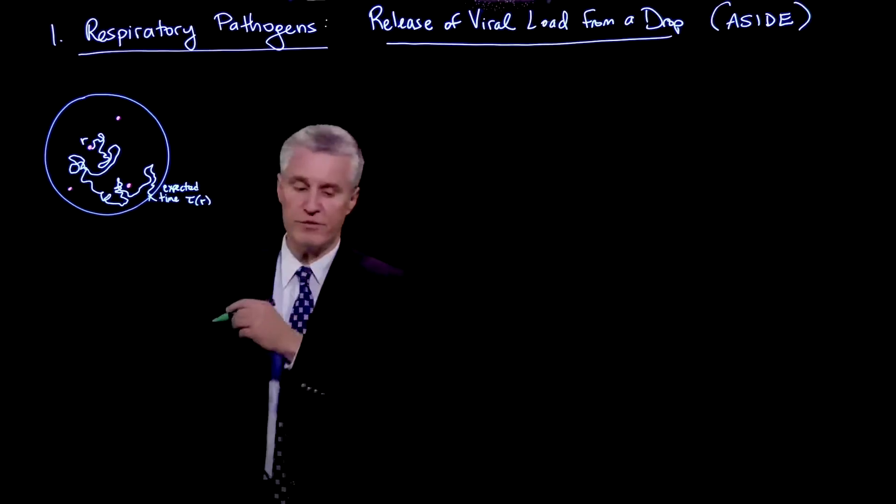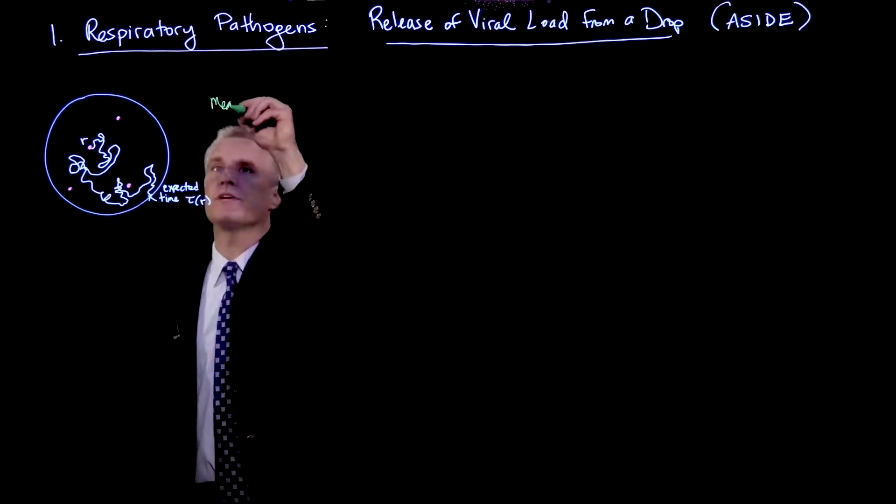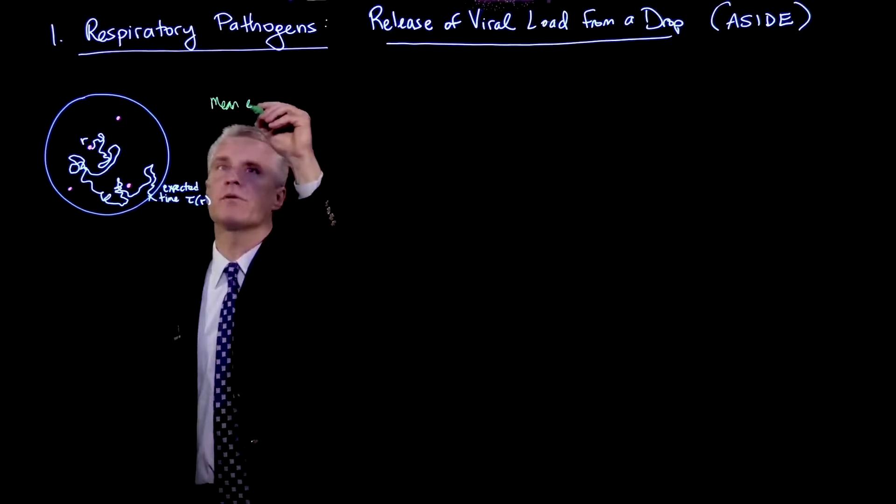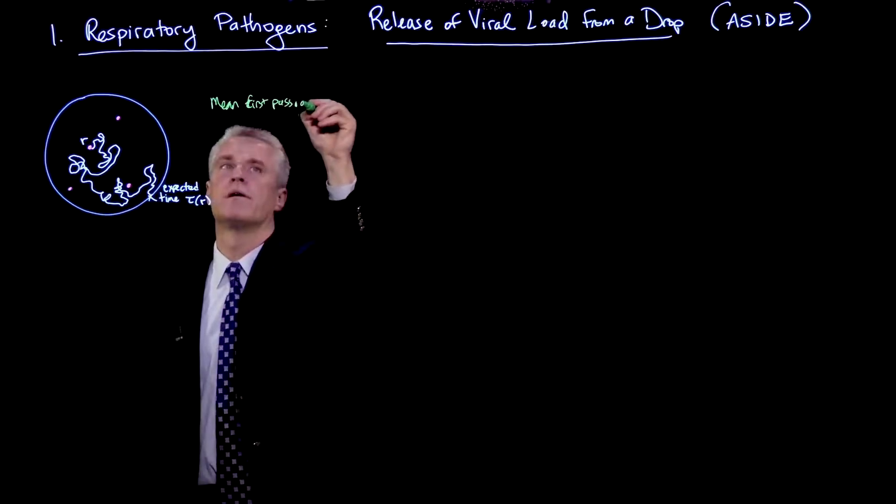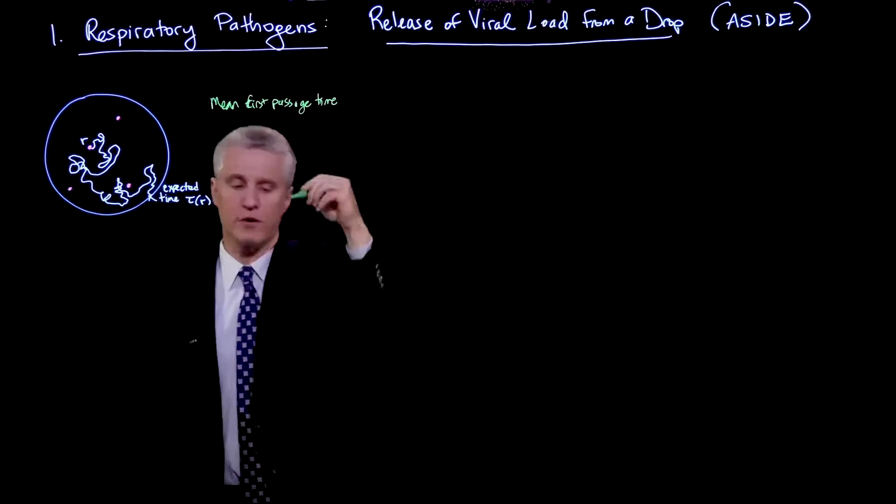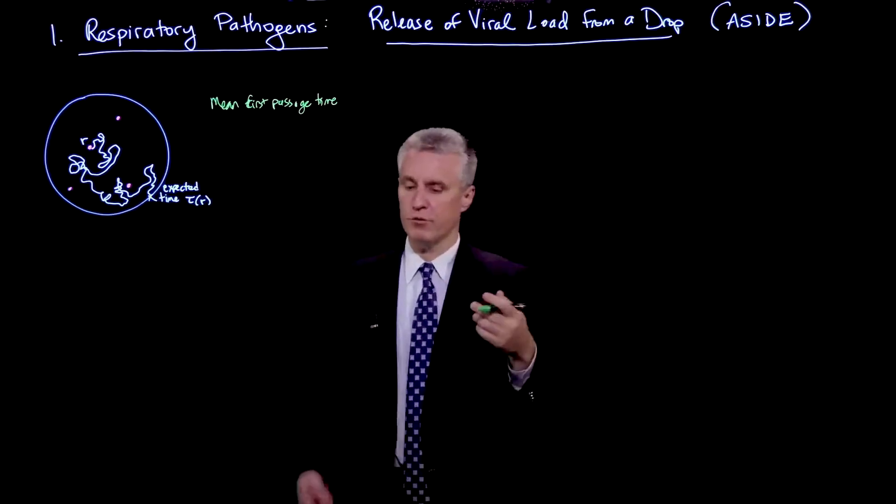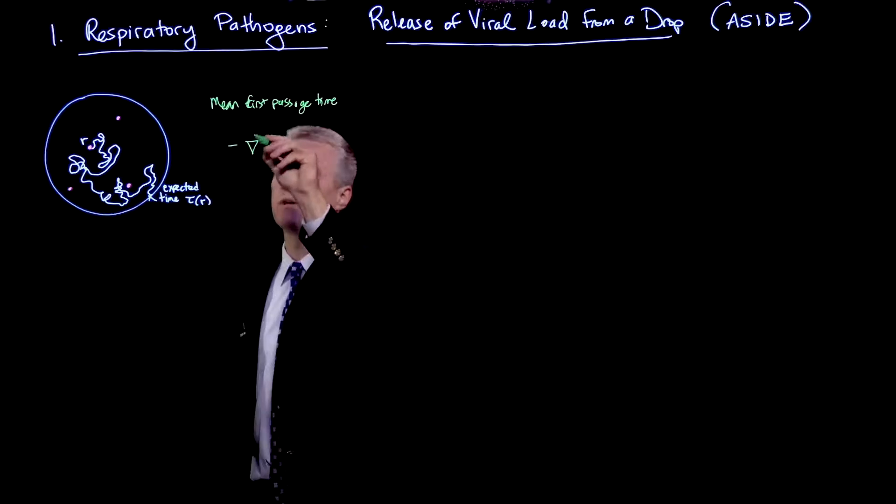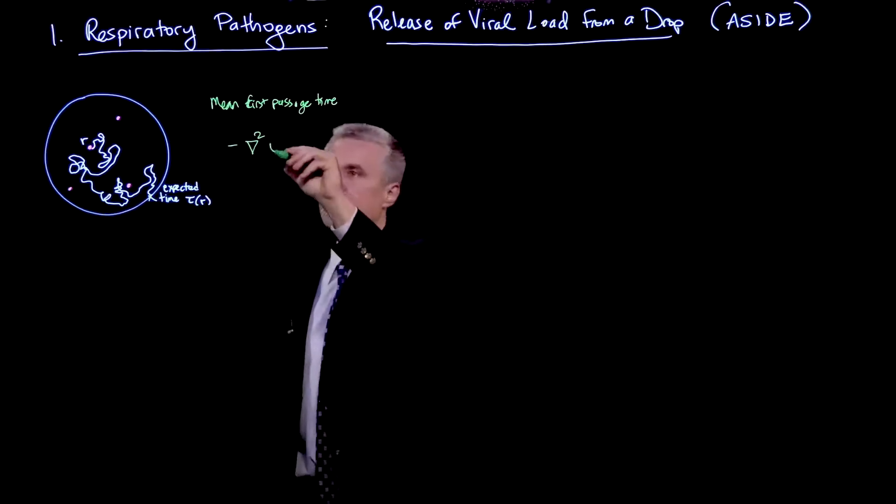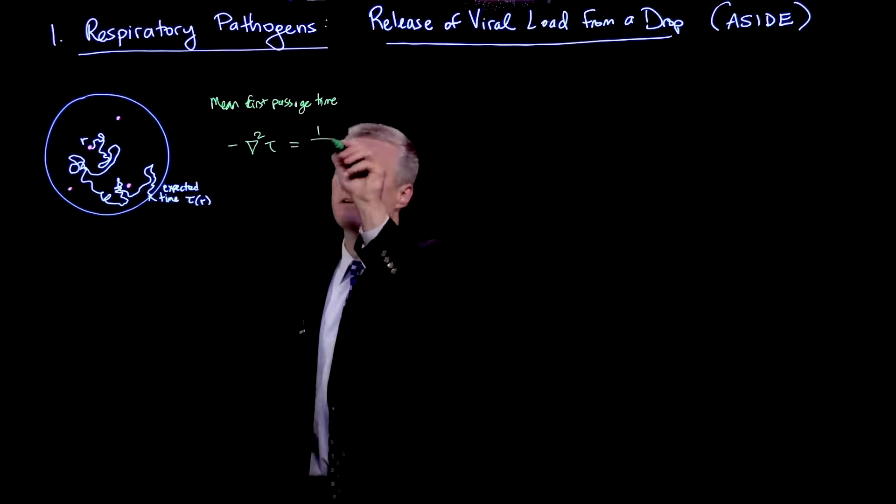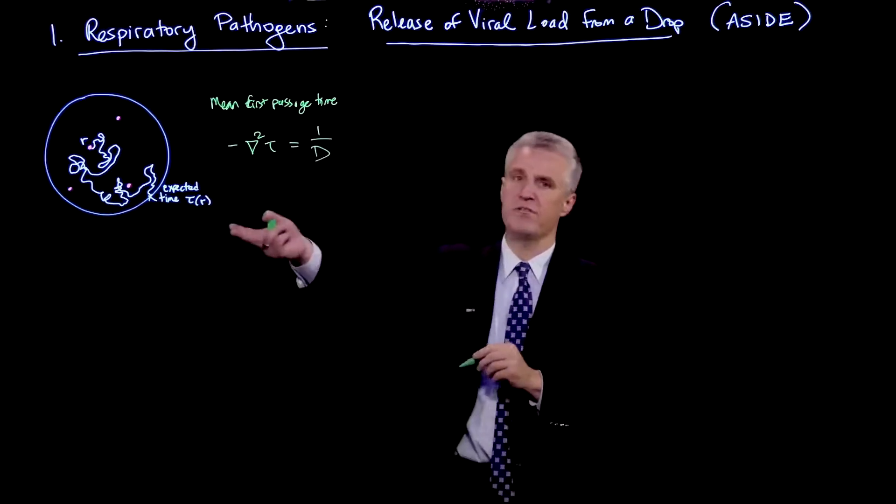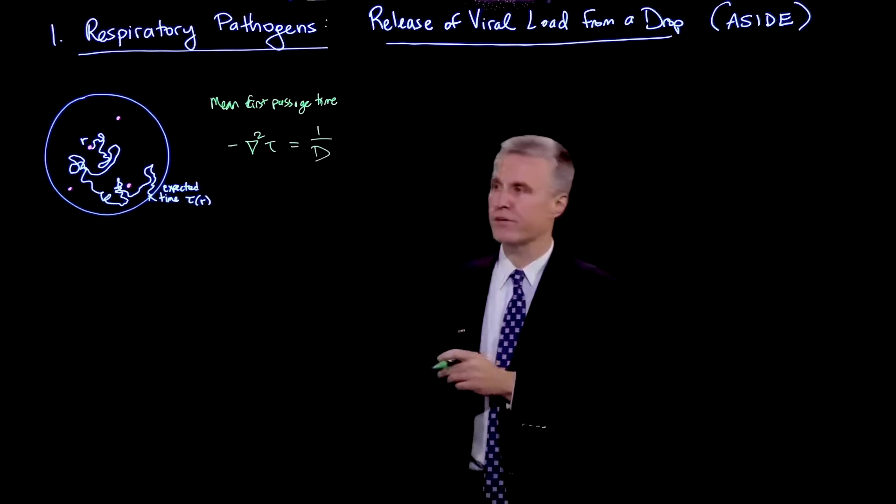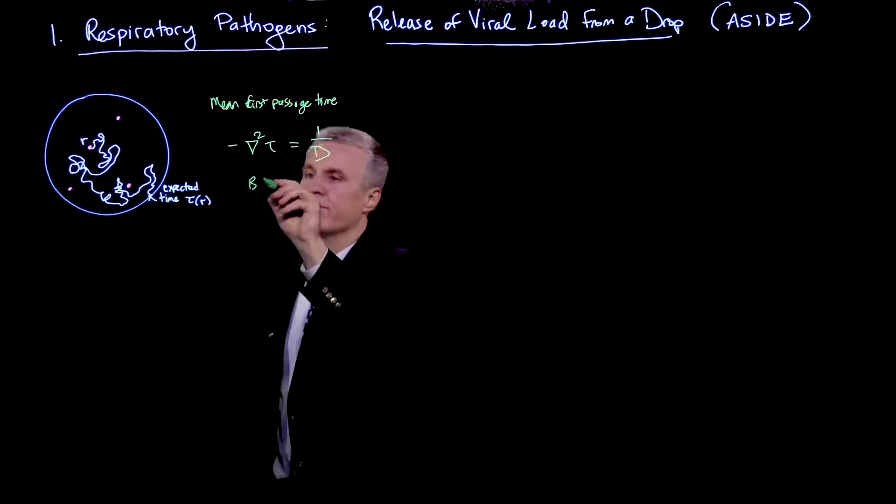And it has the following representation. So the mean or expected first passage time from a point to an absorbing surface solves the following problem. It's the Laplacian of that time, or the minus sign, is 1 over d, where d is the diffusivity. And so this is the dv that I described before, the diffusivity of the virion.